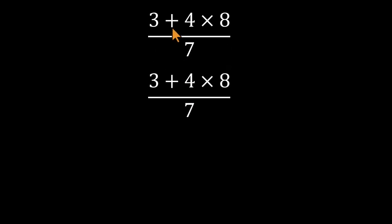A lot of people take one look and think, easy, just add three and four to get seven. Now it becomes seven times eight on top, divided by seven. Cancel the sevens, and boom. Eight.